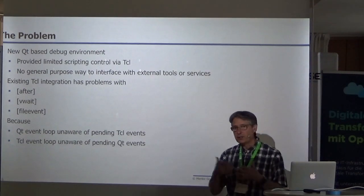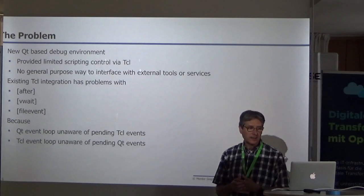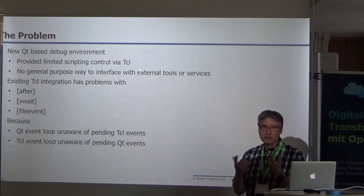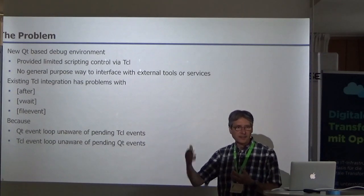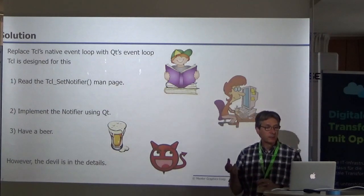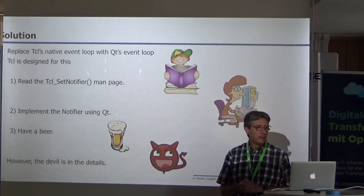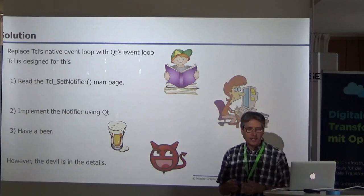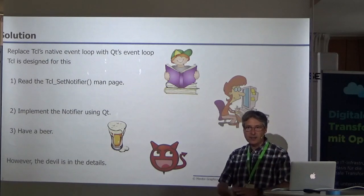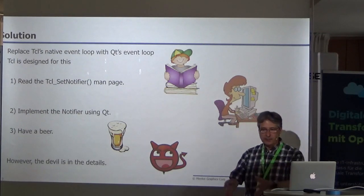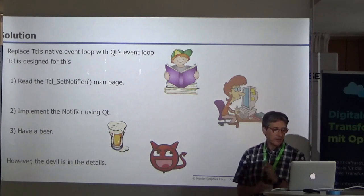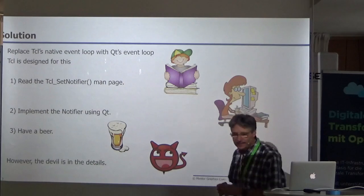The reason was that the Qt event loop was completely unaware of Tcl events, and the Tcl event loop was completely unaware of Qt events. So you call some Tcl code, it schedules an event in the Tcl event loop, it goes back to the Qt event loop, and the Qt event loop is there happily not knowing that the timer expired and it was supposed to go do something. The solution is very easy — all you have to do is replace Tcl's native event loop with the Qt event loop. Tcl is designed to do exactly this sort of thing. All it really takes is reading the Tcl_SetNotifier man page, which does an excellent job of describing exactly how to write a notifier.